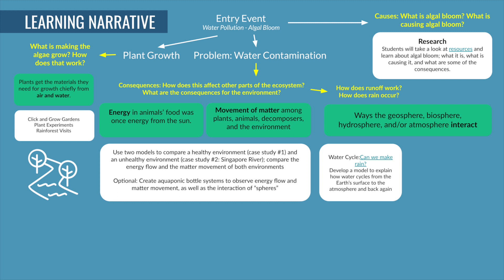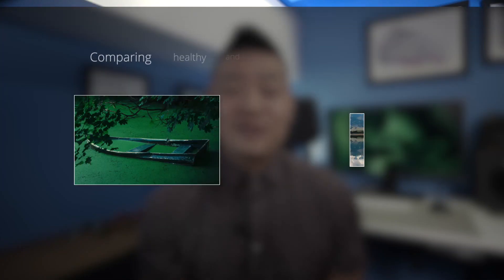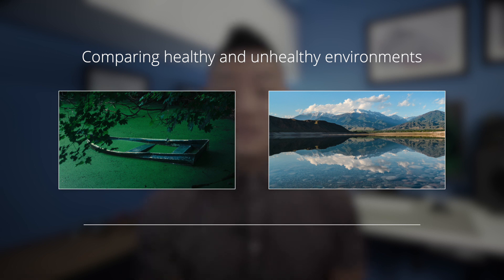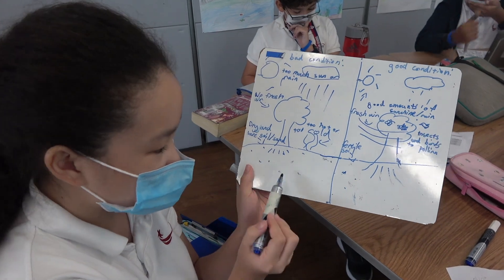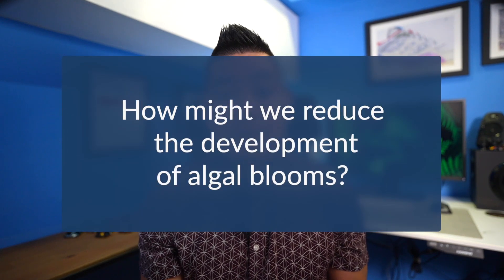For the questions about how this affects other parts of the ecosystem and what the consequences are for the environment, students compared two environments: one with algal bloom and a similar healthy environment without it. The goal was to show the difference between a healthy environment with a sustainable system of energy flow and matter movement, versus the algal bloom environment where parts of the environment are affected and the overall health is compromised. At this point students had already learned about the atmosphere, and now they could zoom out to see how the geosphere, biosphere, hydrosphere, and atmosphere interact within the algal bloom context.